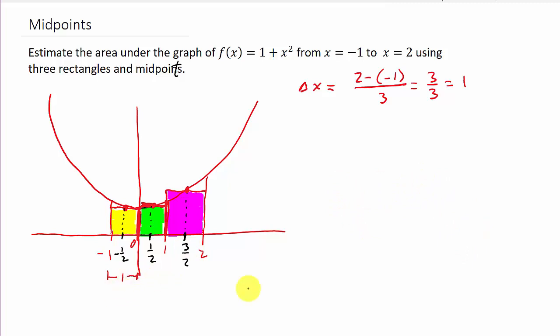So I know the width of each rectangle is 1. But now I need to find the heights. And to find the heights, we're going to plug the x values into the function. Plug it into the function, and then that's going to give us the y value, which is also the height of the rectangle. So to find the height of the first rectangle, I'm going to evaluate the function at negative one-half. And that's going to be 1 plus negative one-half squared, which is 1 plus one-fourth, which that's going to give us five-fourths.